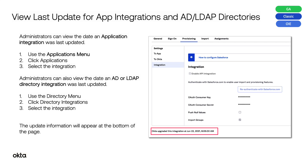View last update for app integrations and AD/LDAP directories. Administrators can view the date an application integration was last updated using the Applications menu — click Applications and select the integration. Administrators can also view the date an AD or LDAP directory integration was last updated using the Directory menu — click Directory Integrations and select the integration. The update information will appear at the bottom of the page.